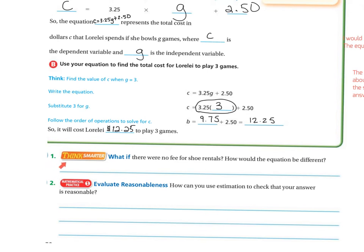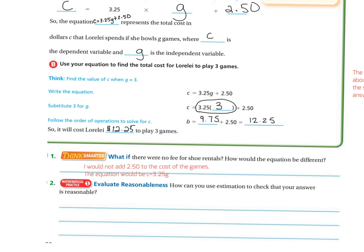Think Smarter, number one: what if there were no fees for shoe rentals? How would the equation be different? If there was no fee for shoe rentals, then you would not add the $2.50, and the equation would be C equals 3.25G. You would just skip the step of adding the 2.50 for the shoe rental at the end.